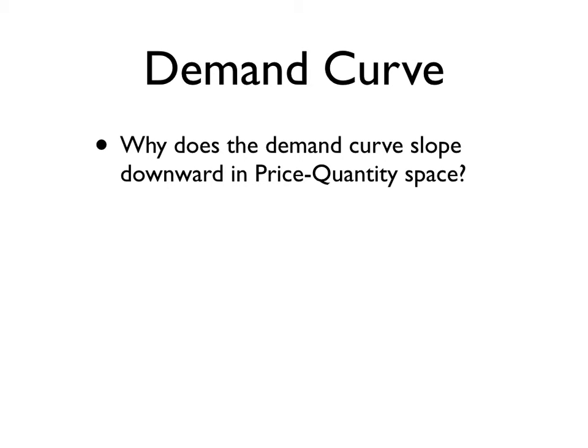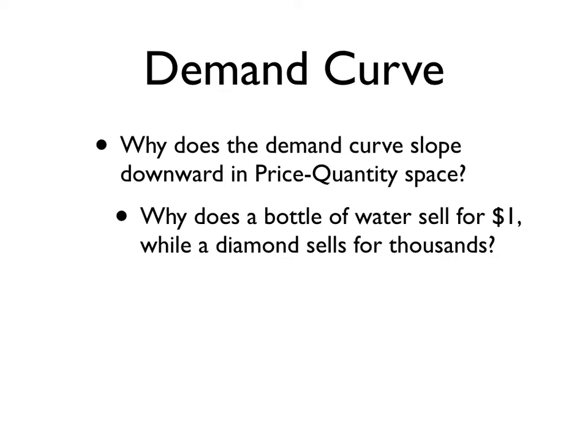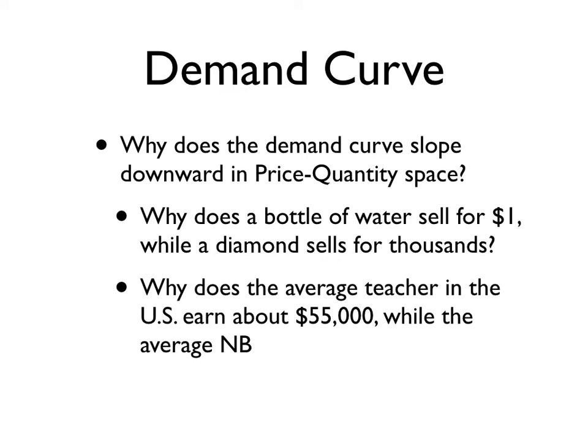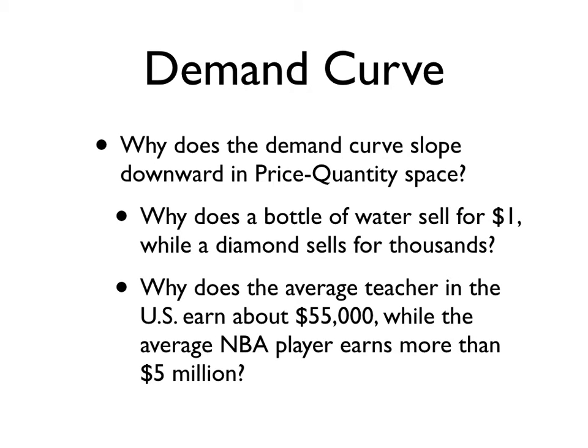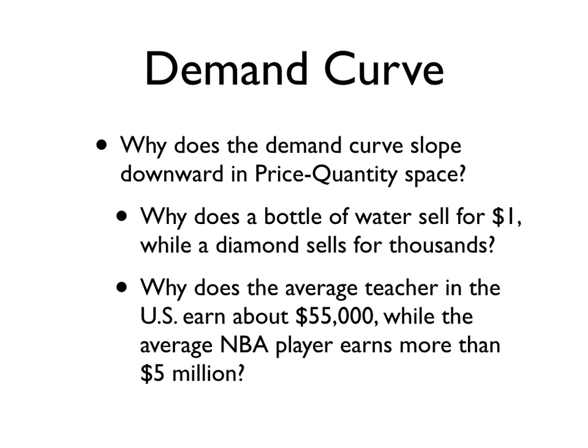We can look at a couple of different questions. Why does a bottle of water sell for a dollar while a diamond sells for thousands of dollars? Or why does the average teacher in the U.S. earn about $55,000 while the average NBA player earns more than $5 million? And it really comes down to marginal value.